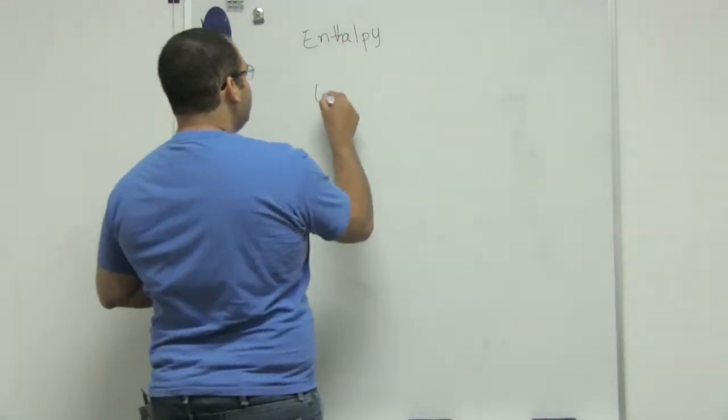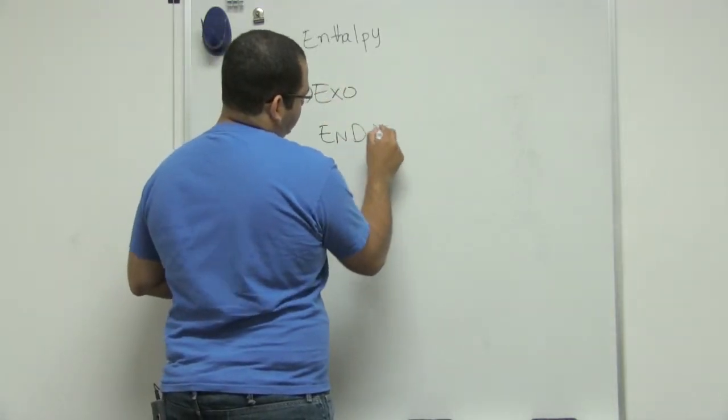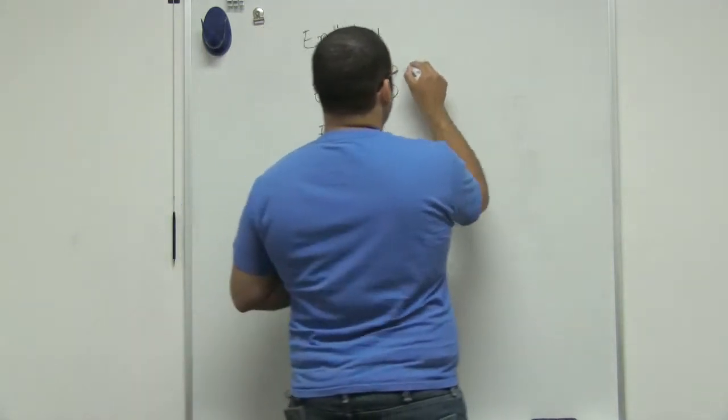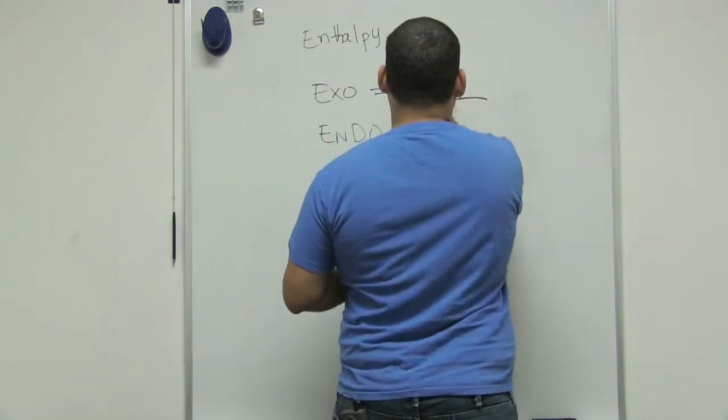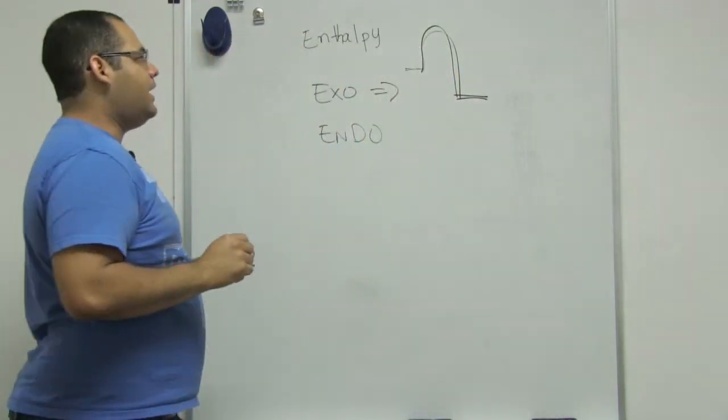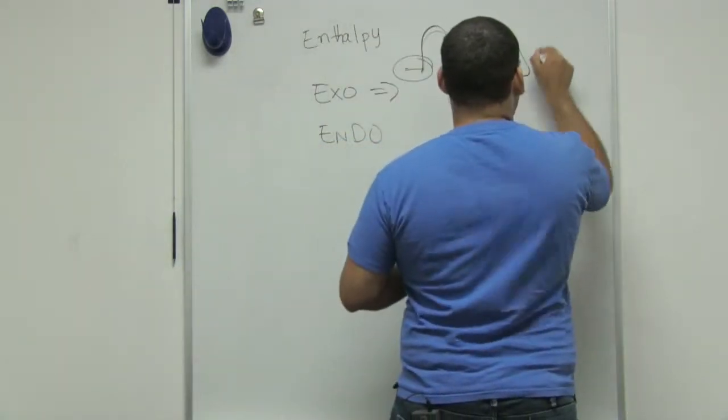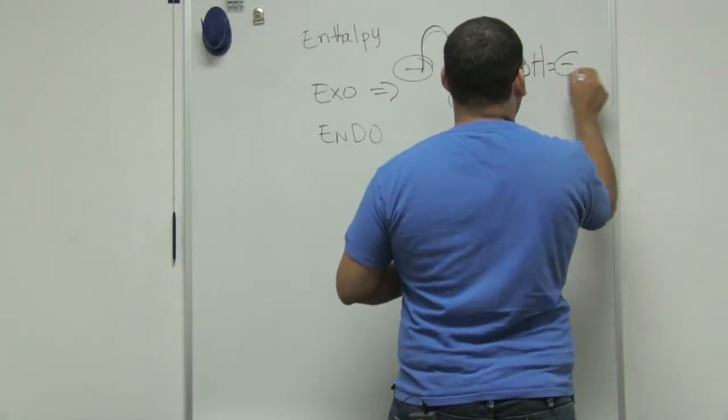So we need to remember what exothermic reactions and endothermic reactions means. I would say that in an exothermic reaction, we have more energy in the reactant side than we have in the product, meaning that our delta H is negative.